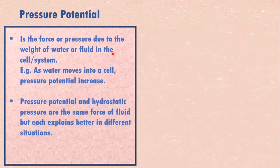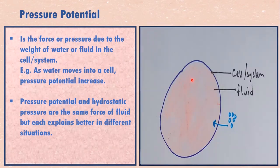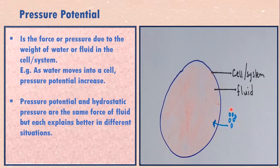We want to quickly turn to look at pressure potential. Pressure potential is just like hydrostatic pressure, but we'll look at why pressure potential is sometimes used and sometimes hydrostatic pressure is used. We have a cell or system with fluid in it. Because there's fluid in it, the fluid has mass and pressure acting on it — it has weight. The weight develops a force inside the system, so there's a pressure of water in this system, and that force is the pressure potential. If water molecules are moving into this system, the pressure potential will be increasing. Pressure potential and hydrostatic pressure are the same force of fluid, but each explains better a different situation.